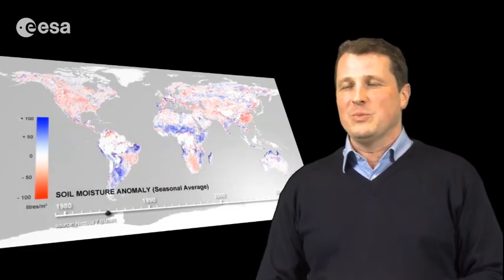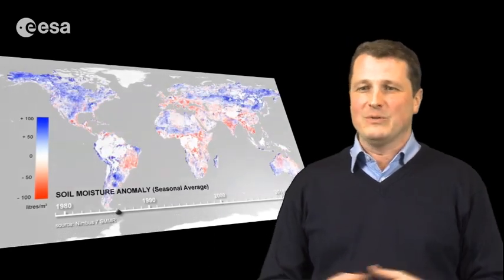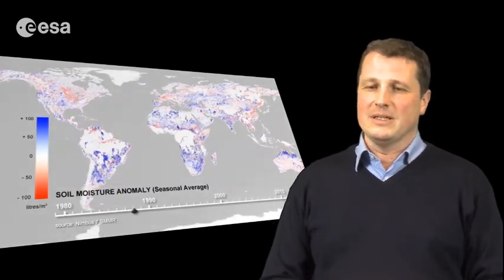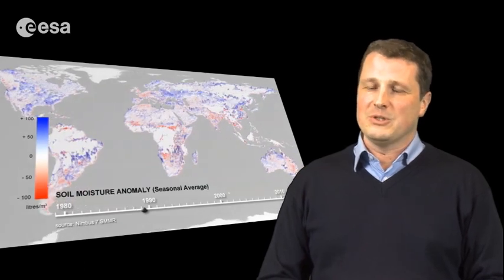Soil moisture is very important because it influences many of the fluxes that are taking place at the land surface. It has an impact on the energy fluxes, it has an impact on water fluxes, it has an impact on carbon fluxes. And this is why it has an important role in the climate system.